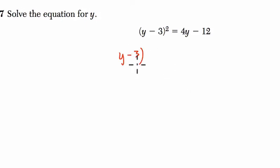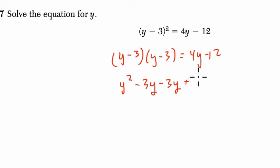That's y minus 3 times itself, so I'm just rewriting it first. Then I use my distributive property. y times y is y squared, y times negative 3 is negative 3y, then negative 3 times y is negative 3y, and negative 3 times negative 3 is positive 9.